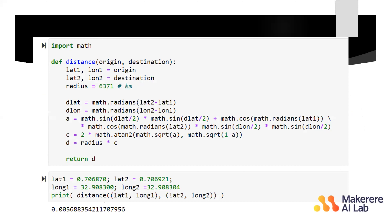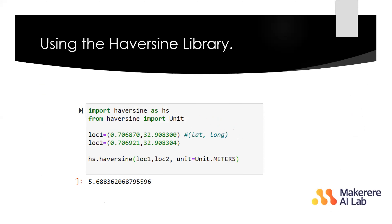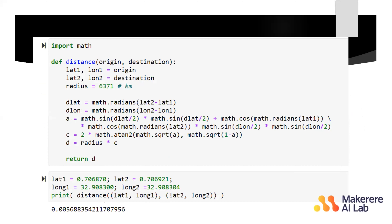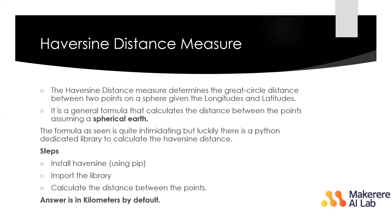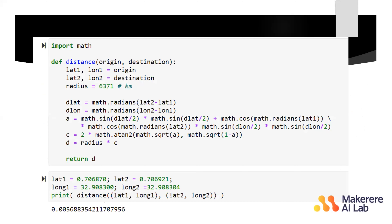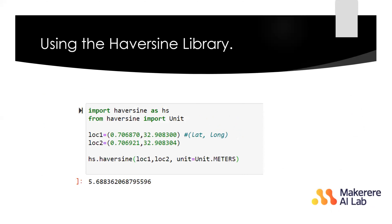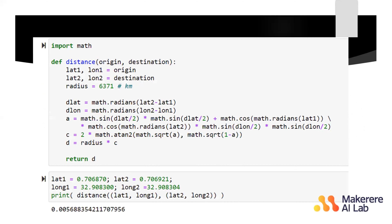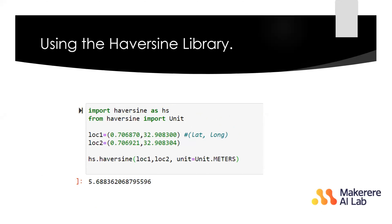The answer given is in kilometers by default, but you can choose the unit you want to use — for example, meters, inches, feet, or miles. In our example, we used meters, so our answer was in meters. For one of our farmers, the distance from one point of data collection to another was just 5.6 meters.